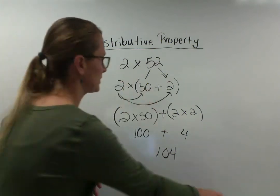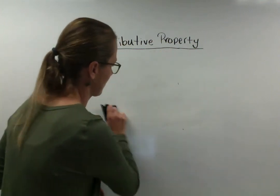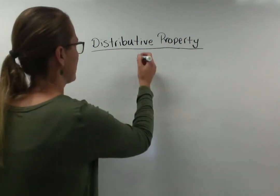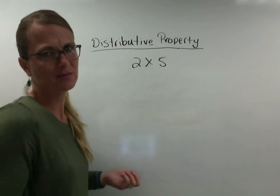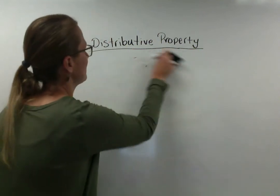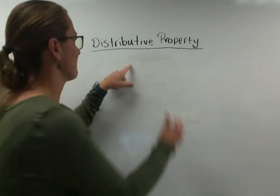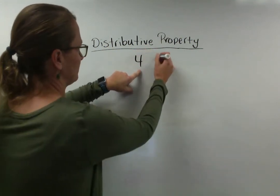So let's try another one. So again we're not going to do distributive property with something like 2 times 5, right? Because we already know that. But when we come across bigger numbers we're going to do it. And it's usually only going to work if our first number is a single digit number.